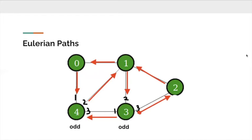In this image, we can see that there are just two odd nodes, nodes 3 and 4, and therefore, we have an Eulerian path that we outlined with red arrows. We start at node 3 and then we end at node 4, both of which are the odd nodes.